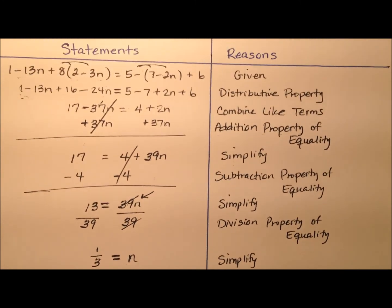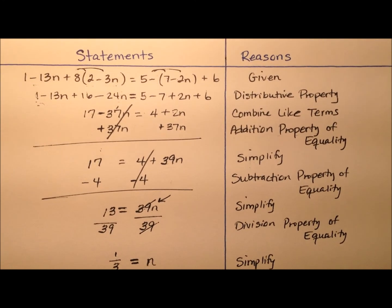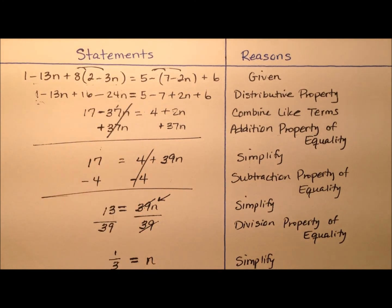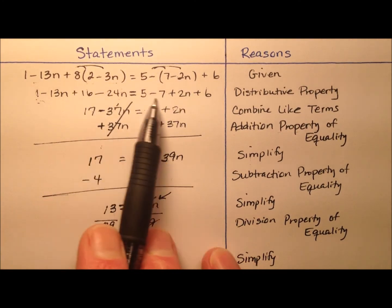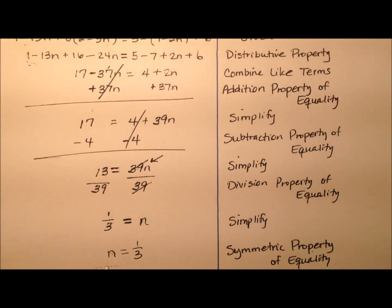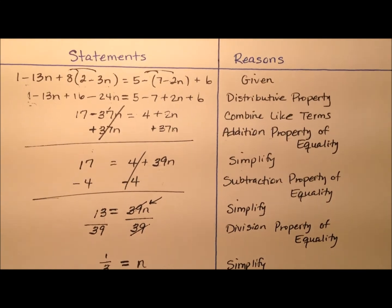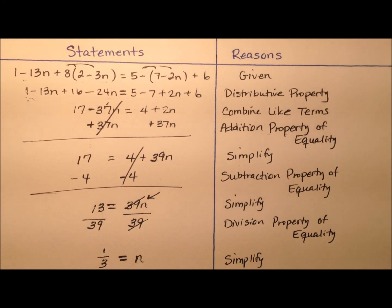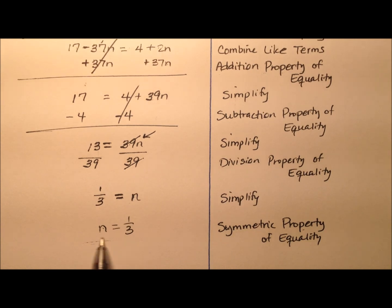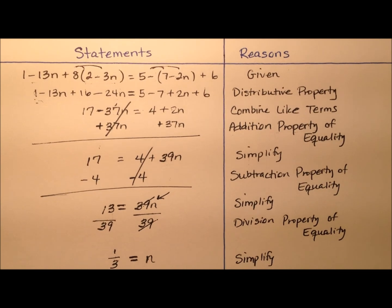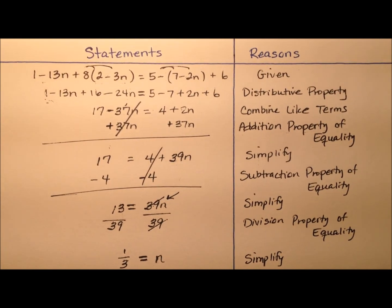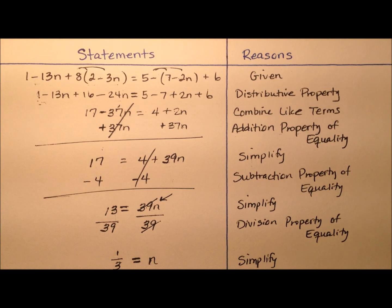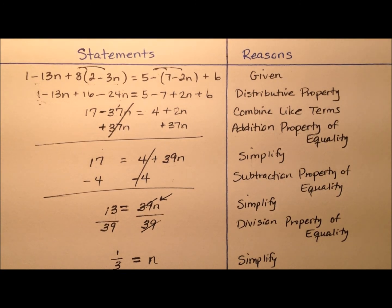Let's step back through what we did. We have our two-column algebraic proof: on the left are the statements, showing the equation worked out step by step until n equals one-third; on the right are the reasons justifying every single step. This is a great way to prepare for the more rigorous proofs you'll see in geometry — solving equations with algebraic proofs.